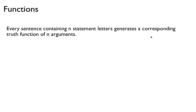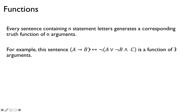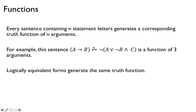Every sentence containing n letters or n symbols generates a corresponding truth function of n arguments. For example, here's a sentence of three variables a, b, c, and this sentence represents a function of three variables whose output is the value of this sentence. Logically equivalent forms generate the same truth function. So if you have multiple forms that are equivalent, they have the same truth function — in other words, if they have the same truth table, they're the same truth function.